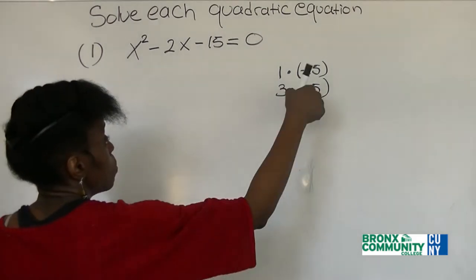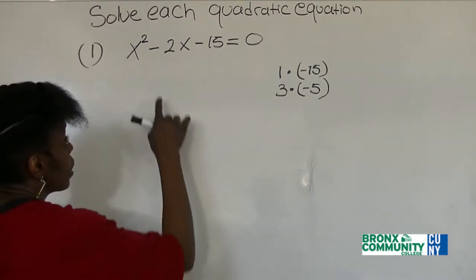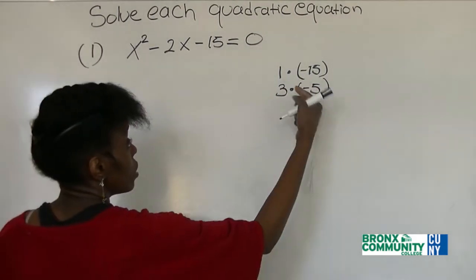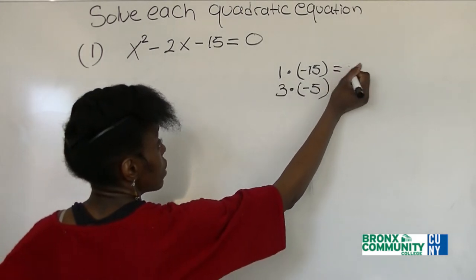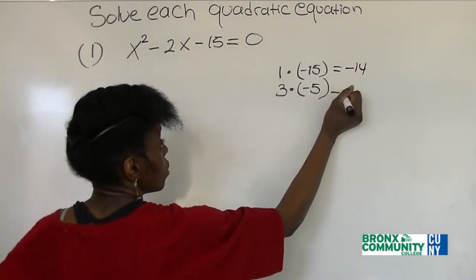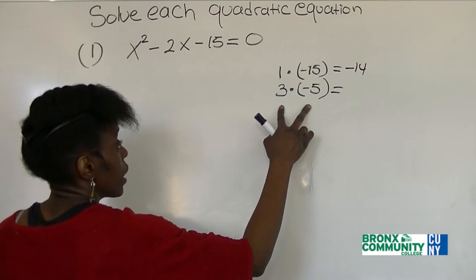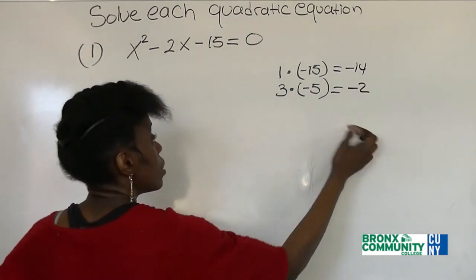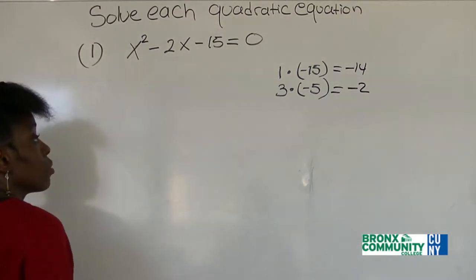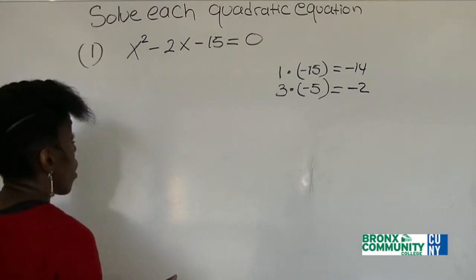So which one of these pairs, when we combine them, would give us negative 2? As you can see, if we subtract this, this would give us negative 14. But if we subtract this one, this would give us negative 2. So that means positive 3 and negative 5 are our factors.